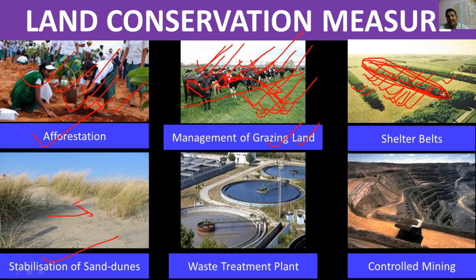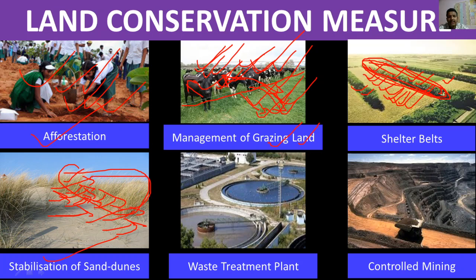For stabilization of sand dunes — if we do not stop the sand, it will keep moving forward with the wind and cover good quality land ahead, ruining it. So we should plant grass here to capture the sand and prevent sand dunes from advancing. This is called stabilization of sand dunes. Similarly, waste treatment plants treat waste before it is released.